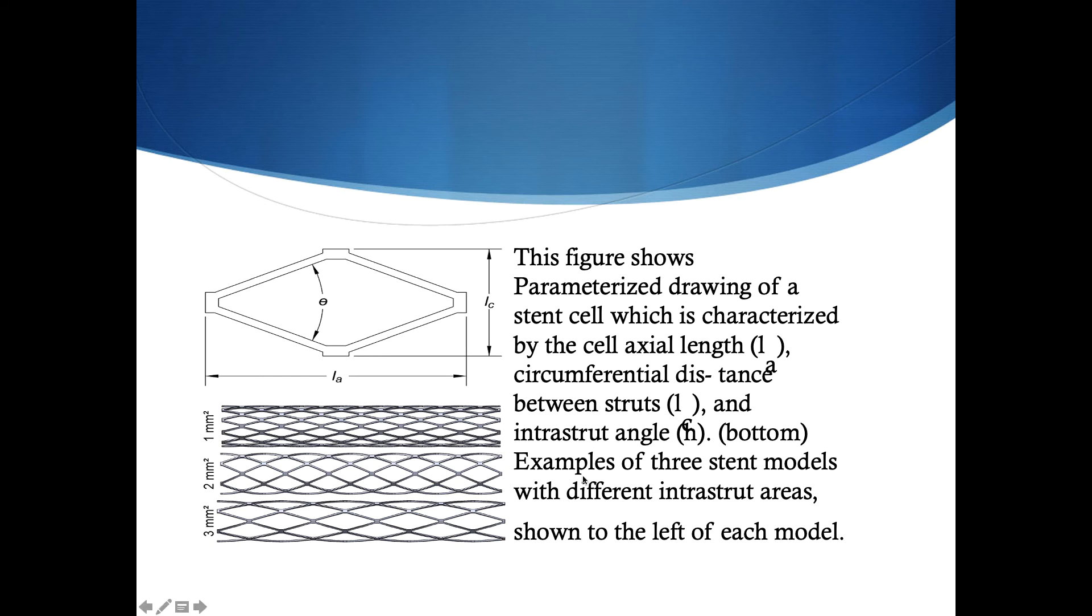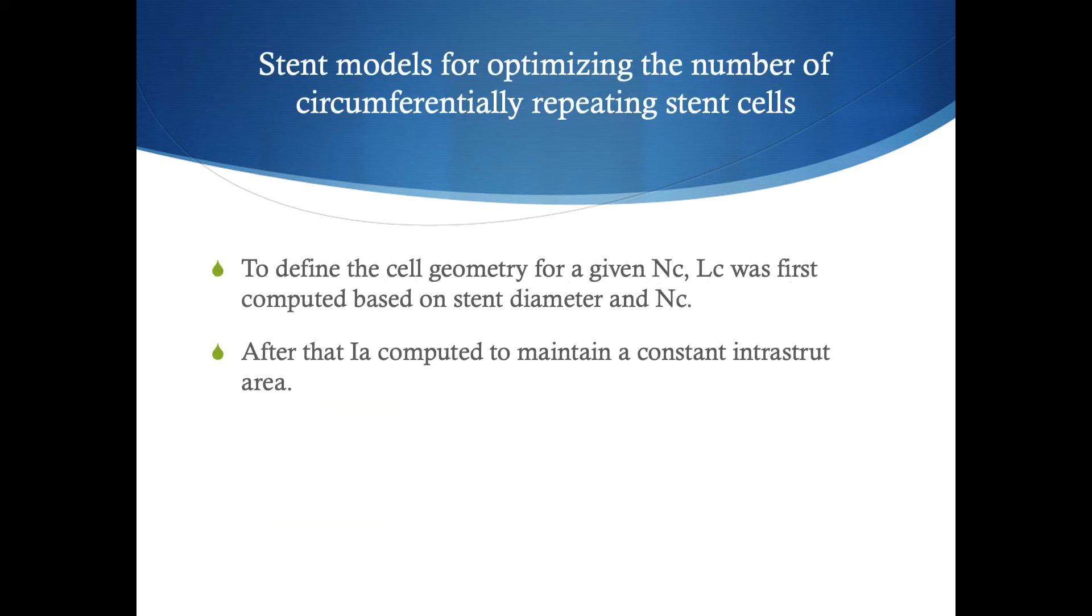As I mentioned formerly, each of these struts contributes to a mesh. Their thickness, length, and the angle of intra-strut part has critical importance in developing the mesh. The thinner and closer to the cardiac angle will have a better result; however, it will end up in an extreme difference between inlet and exit pressure. To define the cell geometry for a given number of cells and according to stent diameter, I computed to maintain constant strut area.